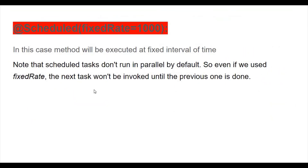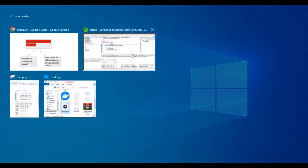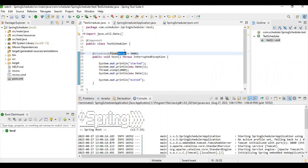`@Scheduled(fixedRate=1000)`: in this case the method is executed at a fixed interval of time. Note that scheduled tasks don't run in parallel by default, so even with `fixedRate` the next task won't be invoked until the previous one is done. There are two cases here. Case 1: the method execution completes before the scheduled time, so the next execution will begin at the scheduled interval.